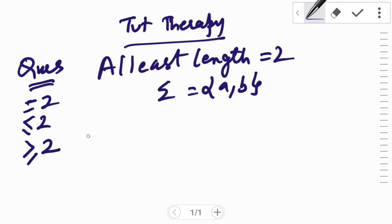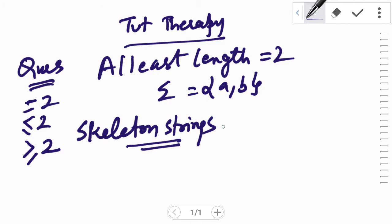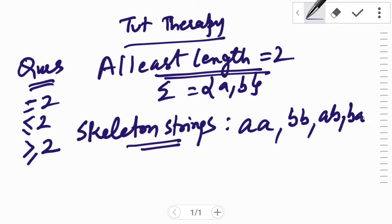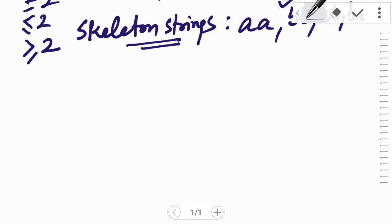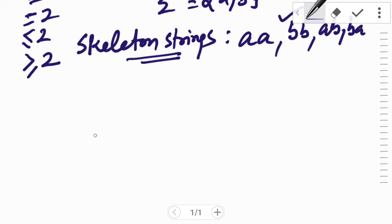As done previously, we will again list the skeleton strings. Now the minimum string which will be accepted by the DFA is of at least length 2. That means double a, double b, ab, and ba will be accepted by our DFA. So let us try to construct a DFA based upon this choice.